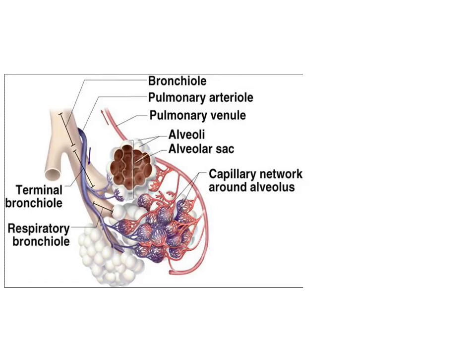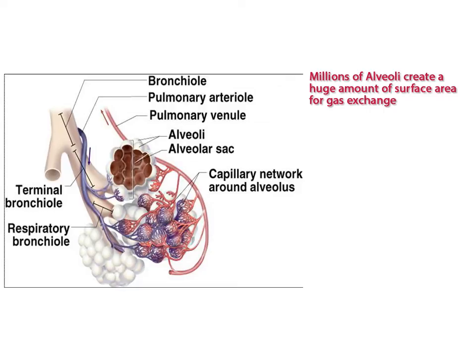The following characteristics of the alveoli make them very efficient at gas exchange. First, they are very numerous — up to 300 million alveoli in the human lung. This provides a great surface area for the diffusion of gases to occur.